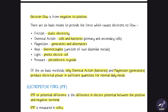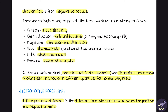There are six basic means to provide the force which causes electrons to flow. In the example of the battery, it provides the potential difference to make electrons flow across the circuit. The next method is friction or static electricity — for example, if there is a floor rug and you're walking on it.